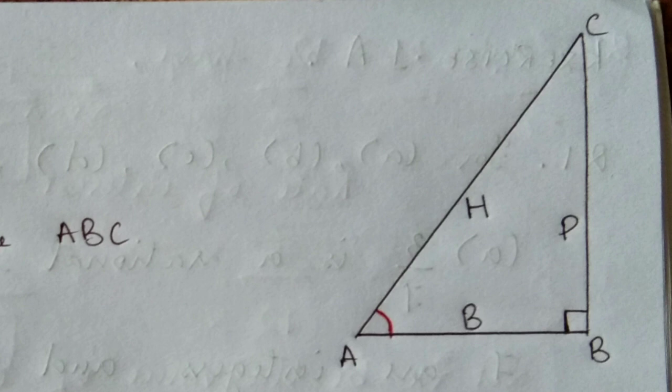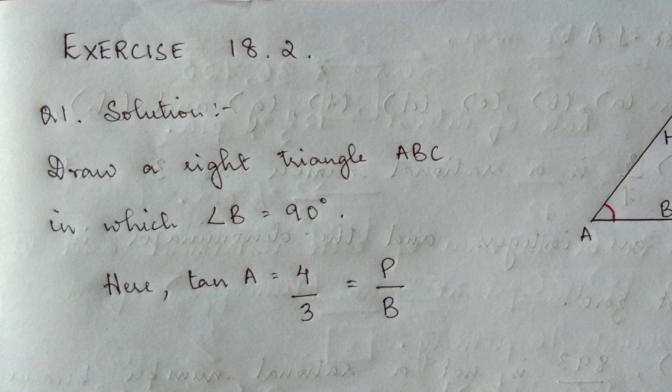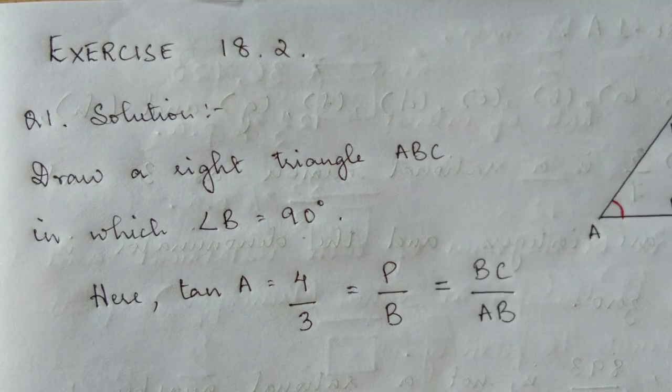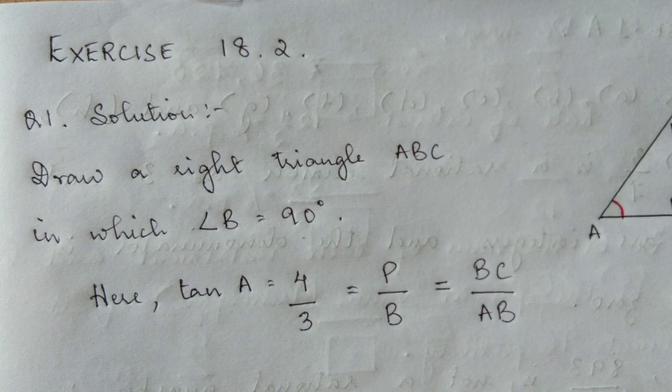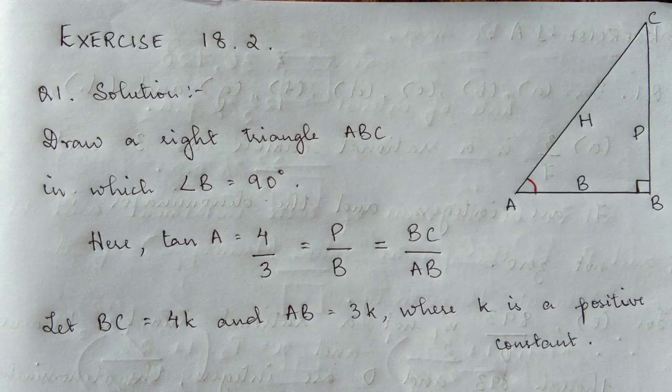We label the sides: AC is hypotenuse, AB is base, BC is perpendicular. The question states tan A equals 4/3. Now tan A equals P/B, which is perpendicular by base, equals BC/AB. So from our triangle, tan A equals BC by AB.